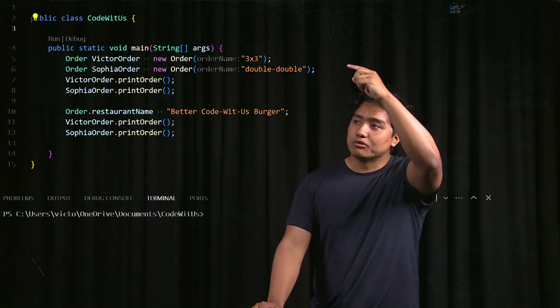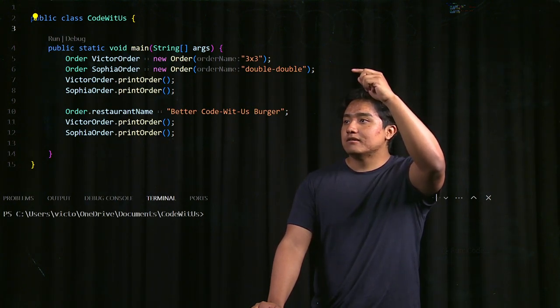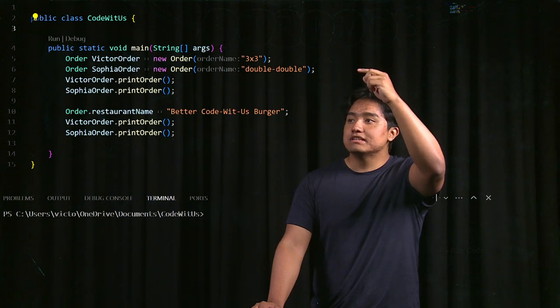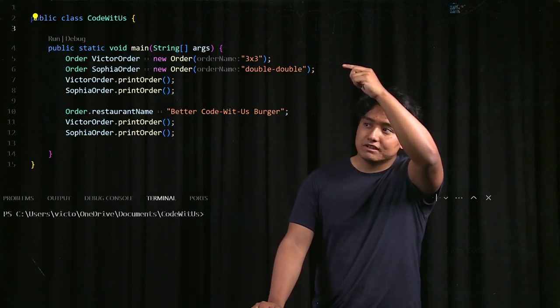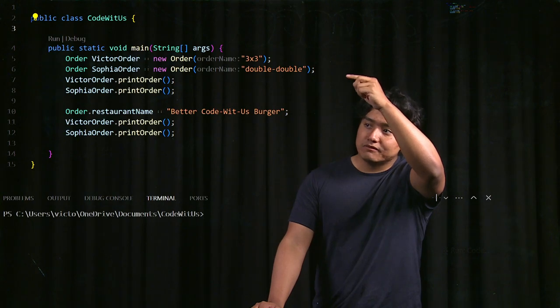We would set the type to order, use the variables Victor's order and Sophia's order, and then we can set it equal to a new instance of the order class with the constructors that we want. So for Victor it's three by three and for Sophia it's double double.